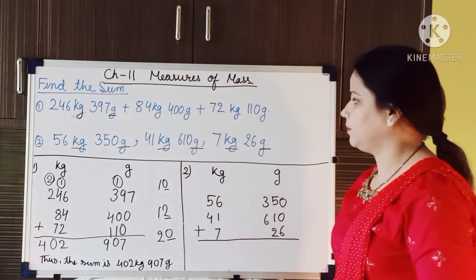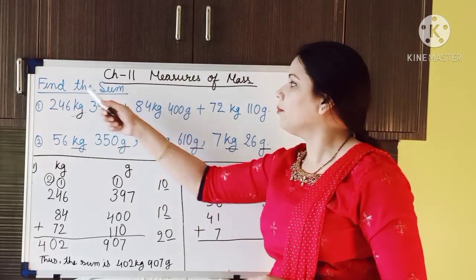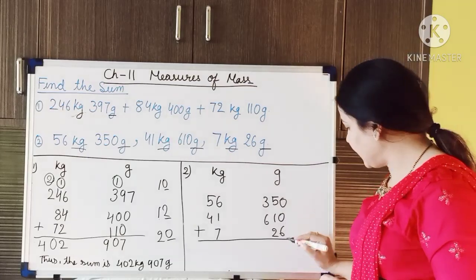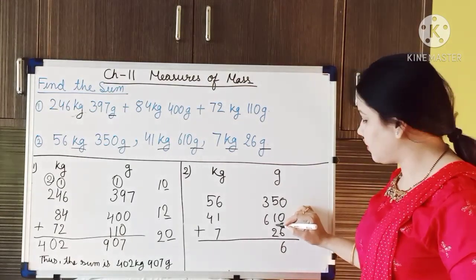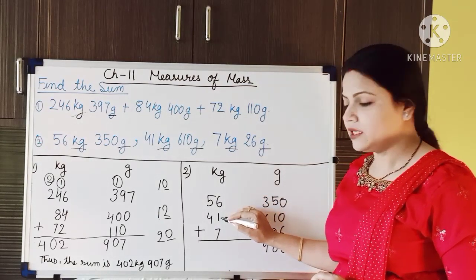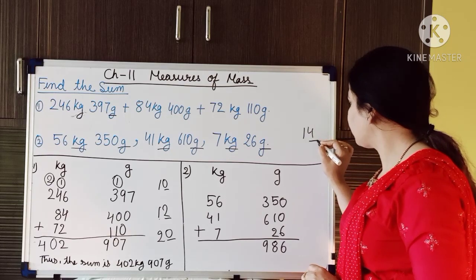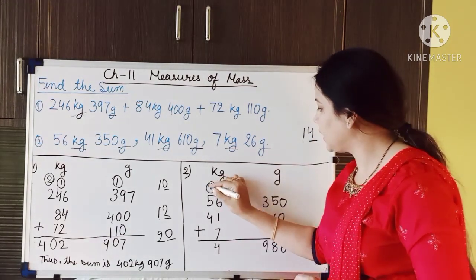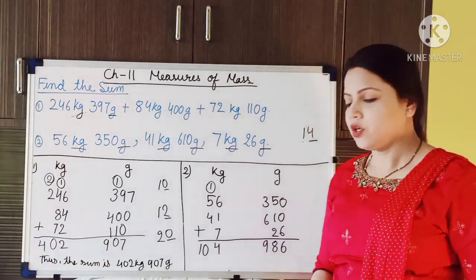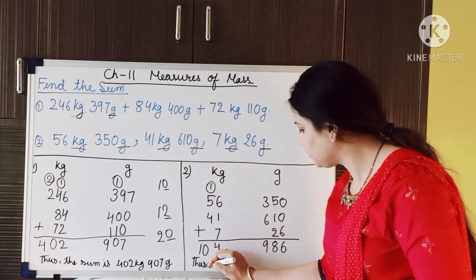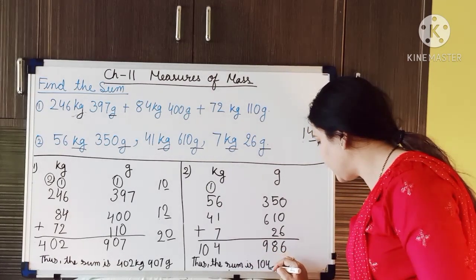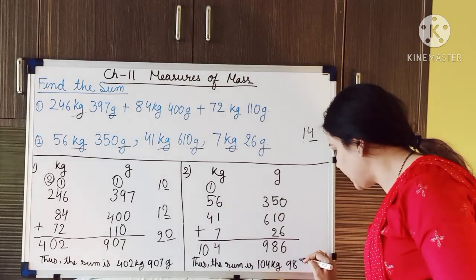Now we have to add. The addition sign is not given here, but the question says 'find the sum' — sum means we add. So: 0 plus 0 is 0, plus 6 is 6. Then 5 plus 1 is 6, plus 2 is 8. Then 3 plus 6 is 9. Now 6 plus 1 is 7, plus 7 is 14 — write 4 and carry 1. Then 5 plus 1 is 6, plus 4 is 10 — write 10. So the sum is 104 kg and 986 gram.